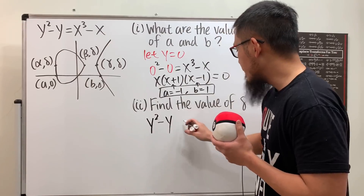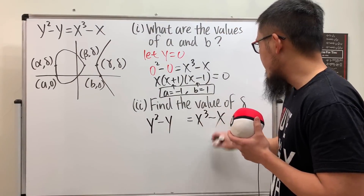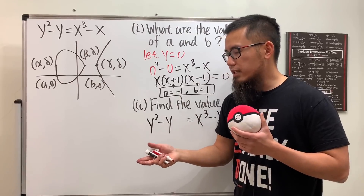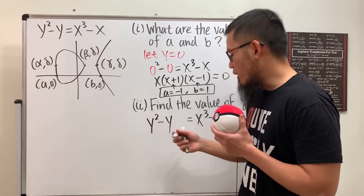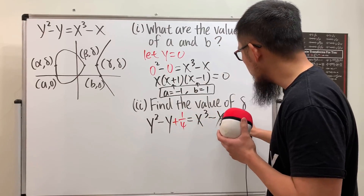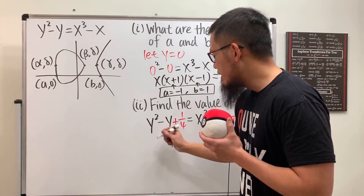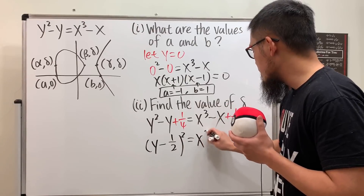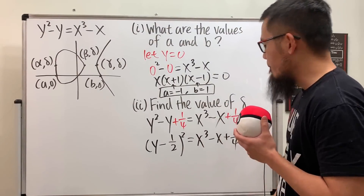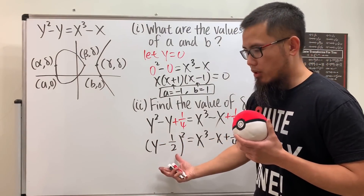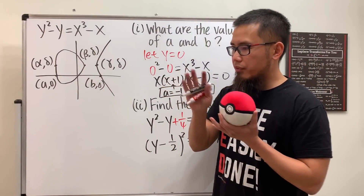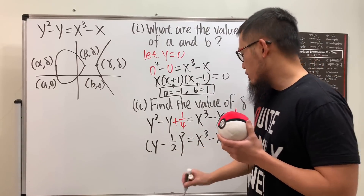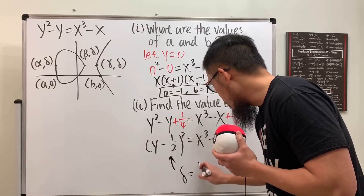We write y² - y + (space) = x³ - x, then take (-1/2) and square it to get 1/4 — that's the magic number we add to both sides. This gives us (y - 1/2)² = x³ - x + 1/4. This tells us the original graph has just been shifted up by one-half unit, so delta = 1/2.